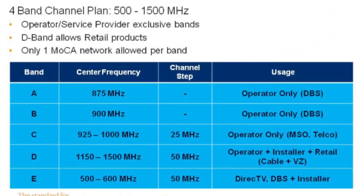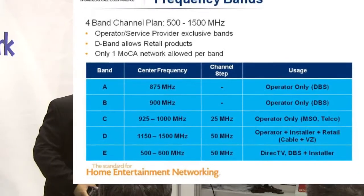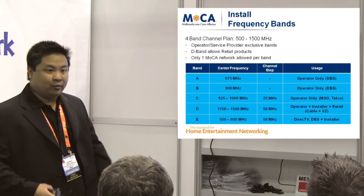These are the frequency bands for MoCA. The D band is for cable — we place the MoCA signal above one gigahertz because the cable signal is below. The E band is for DirecTV, positioned at 500 to 600 megahertz. And there's a new F band for the new Dish Hopper, which uses around 800 megahertz. So there are three different bands to recognize.